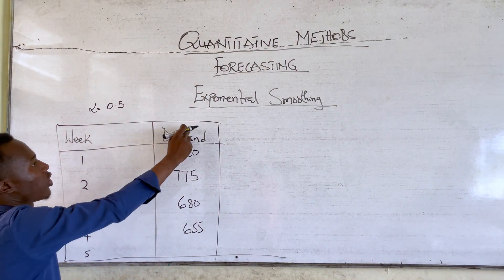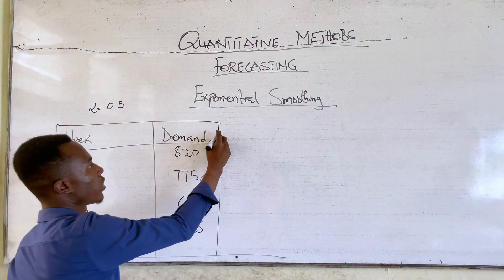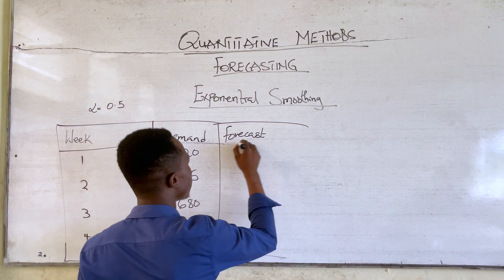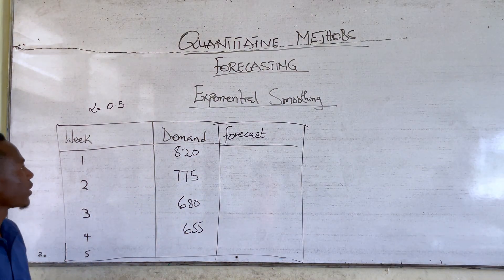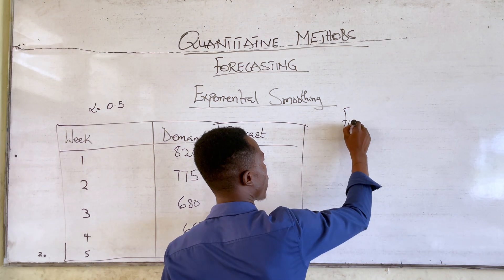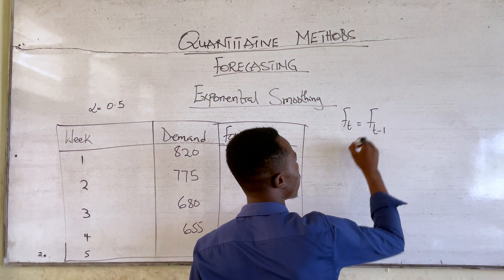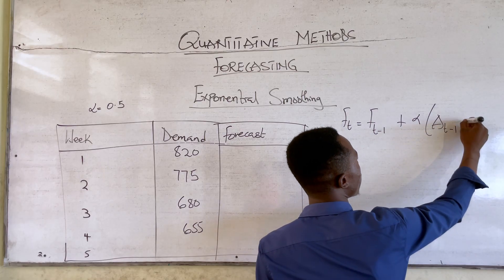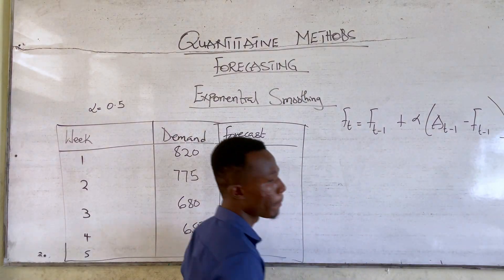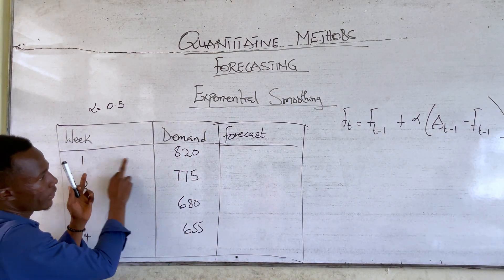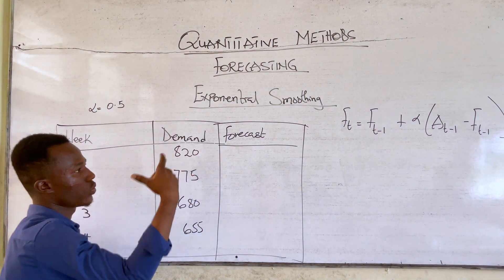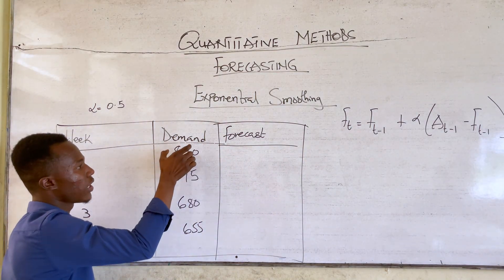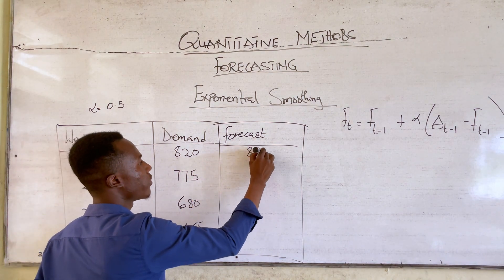Looking at the new question, we have our week, our demand, and a constant of 0.5. We have to forecast for the rest of the periods. Our formula is: forecast for the current period equals forecast for the previous period plus the constant multiplied by the actual value for the previous period minus the forecast for the previous period. Forecast for week 1 equals the actual demand, which is 820, since there is no prior period.